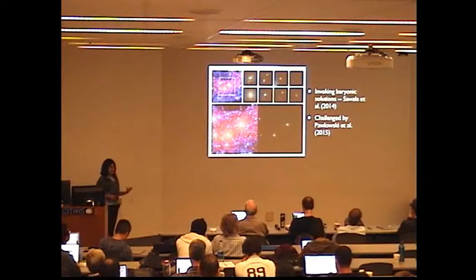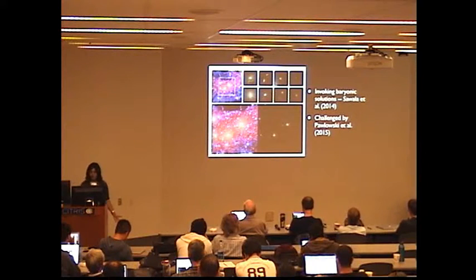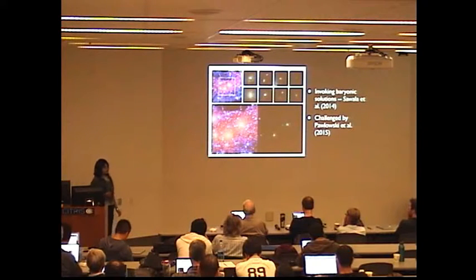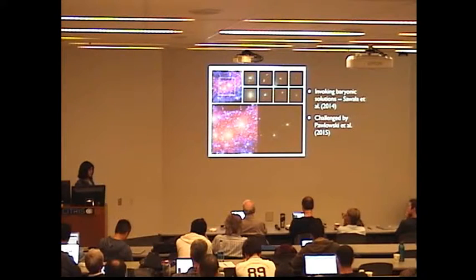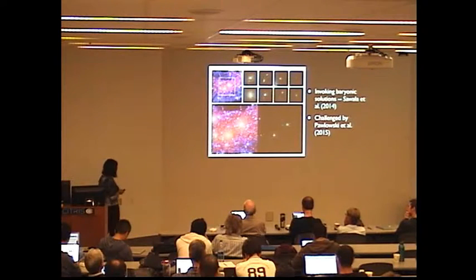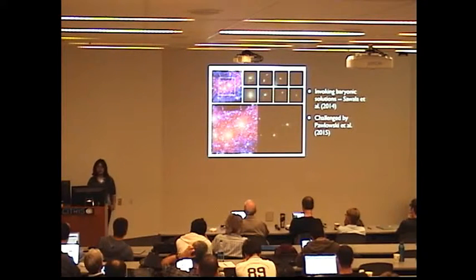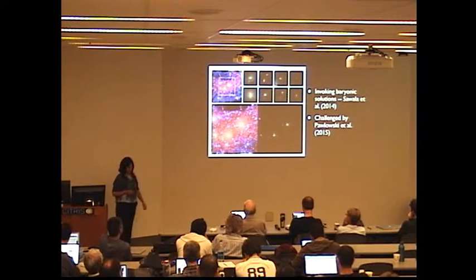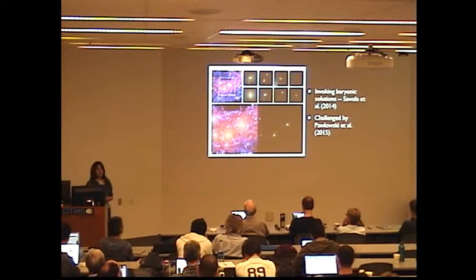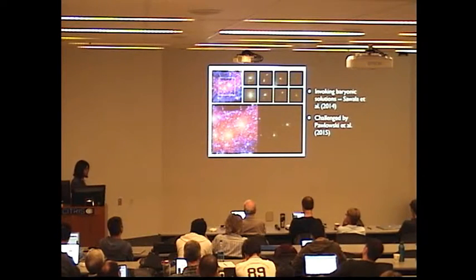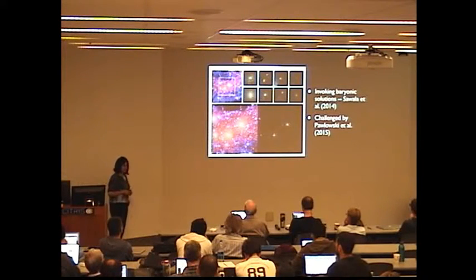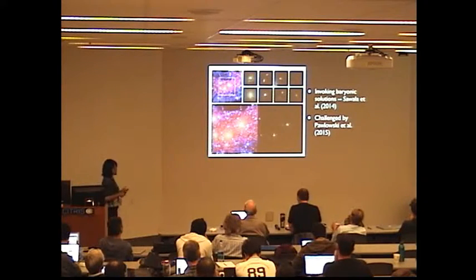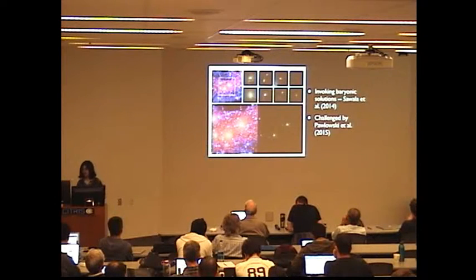A final class of solutions is to invoke baryonic physics. This has been done by Sawala et al. in 2014, they used hydrodynamical cosmological simulations to argue that, in fact, the kind of structures you see around the Milky Way and Andromeda are not inconsistent with these kind of simulations. Now, these solutions have been challenged by various authors, including Pawlowski. Pawlowski, for example, notes that Sawala's solution doesn't adequately take into account the radial distribution of the satellites.